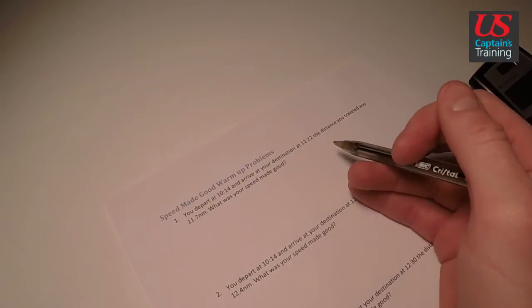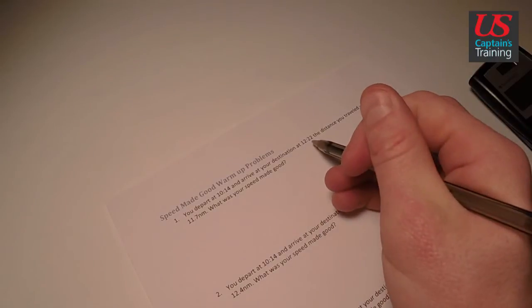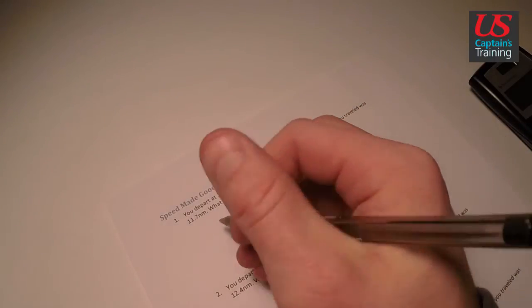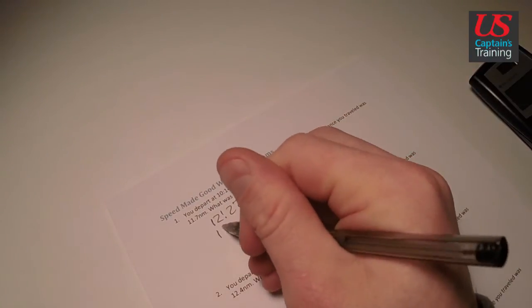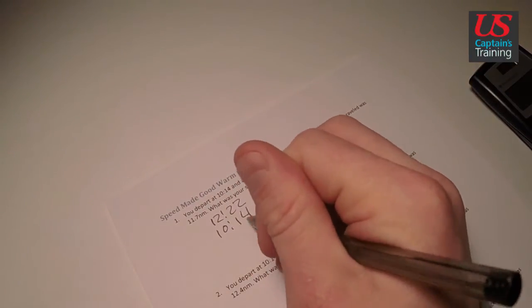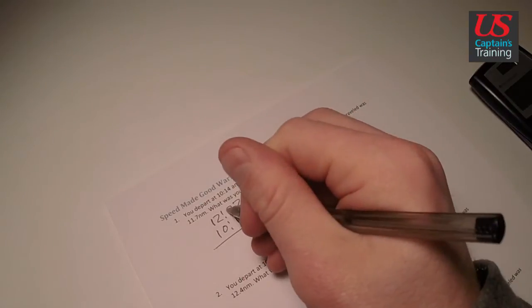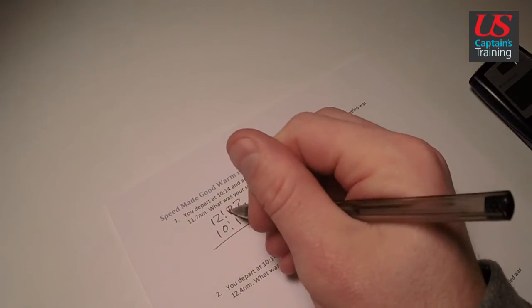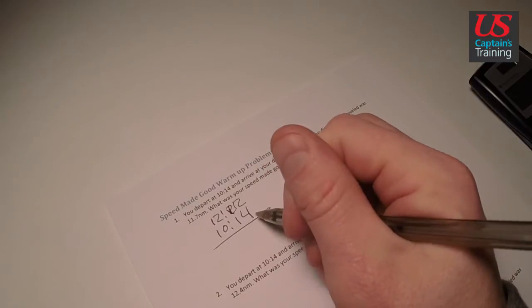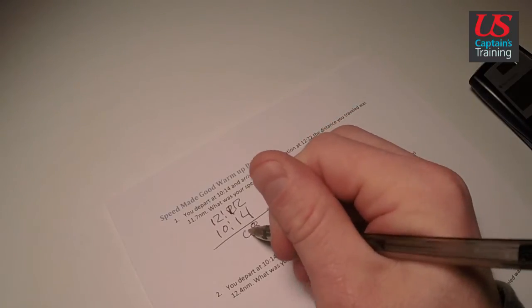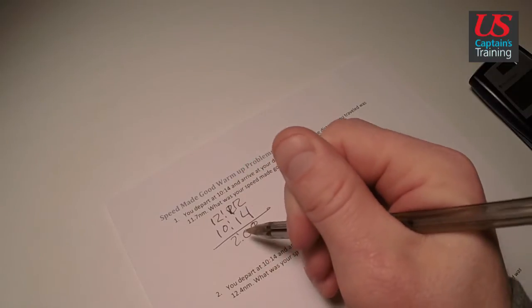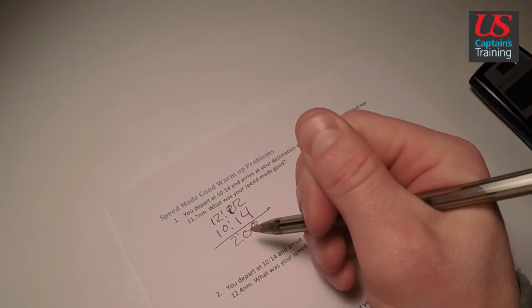Let's find our time. Our time is 1222 minus 1014. So we can borrow here. That's a 112, and that makes this 8. 8 minutes, 2 hours, and 8 minutes.